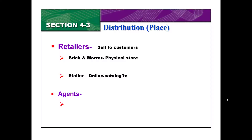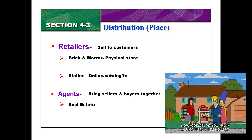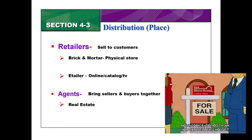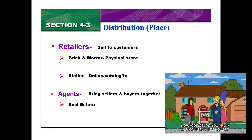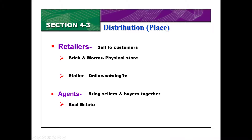The last type of intermediary is what's called an agent. An agent is a specific person who brings the sellers and buyers together. The most common example is a real estate agent. If I want to sell my house, I'm going to hire a real estate agent who will go out and find people who want to buy my house, working as that middleman or in-between person.